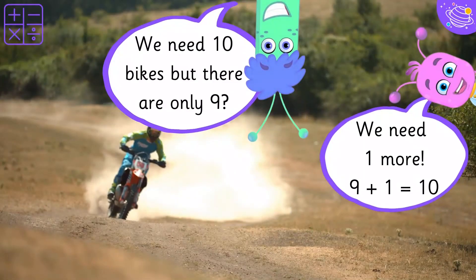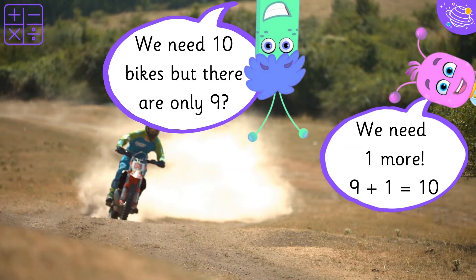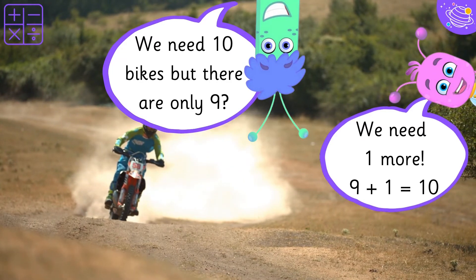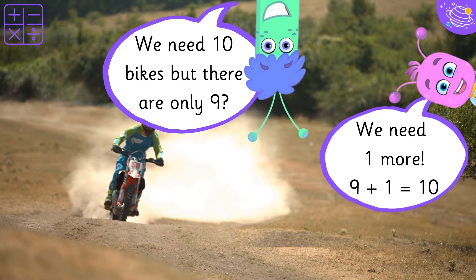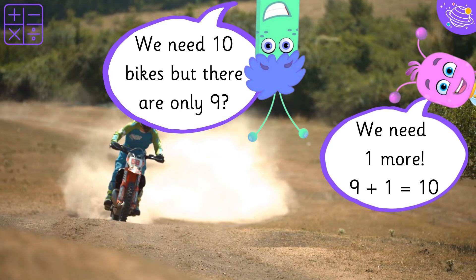We need ten bikes, but there are only nine. We need one more. Nine plus one equals ten.